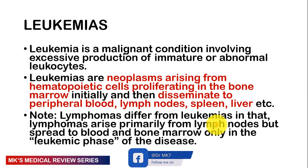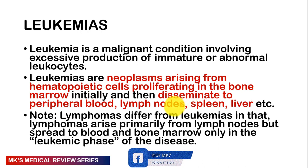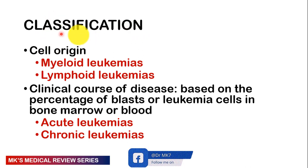Keep this diagram in mind, because leukemia is a malignant condition arising from excessive proliferation of immature or abnormal leukocytes — sometimes mature leukocytes. Most leukemias arise from hematopoietic stem cells proliferating in the bone marrow initially, then disseminating to peripheral blood, lymph nodes, spleen, and liver. The key difference between lymphomas and leukemias: lymphomas are found primarily in solid organs like lymph nodes but can spread to blood and bone marrow. Leukemias can be classified by cell origin — myeloid or lymphoid — and by clinical course based on the percentage of blasts in bone marrow or blood.